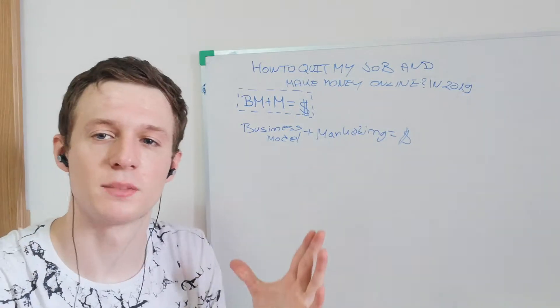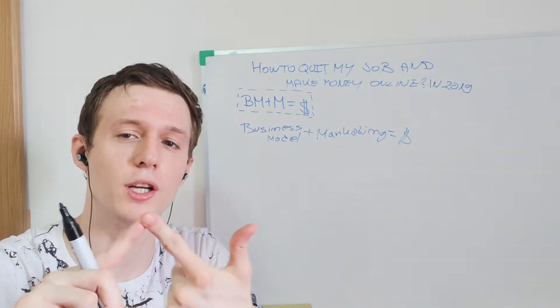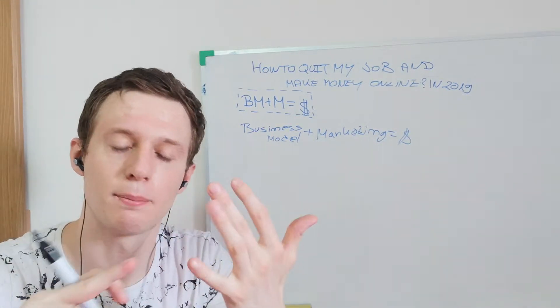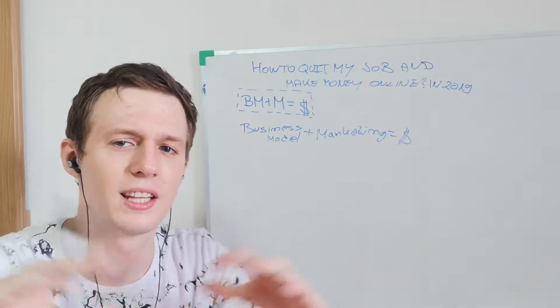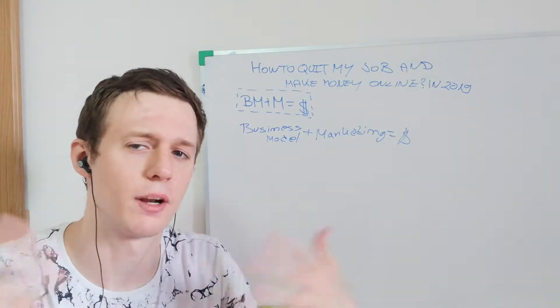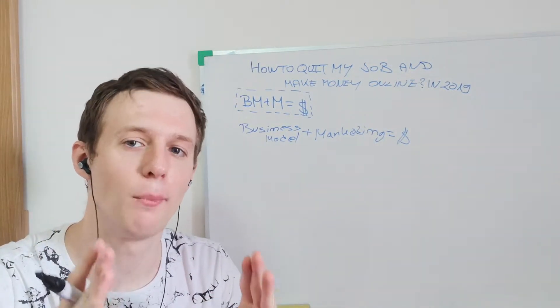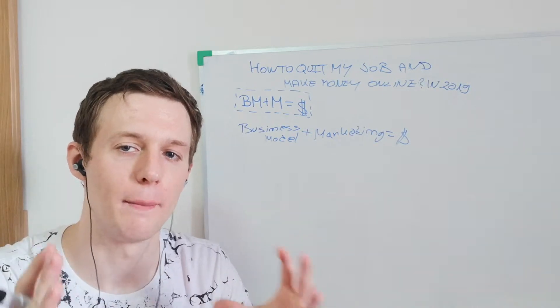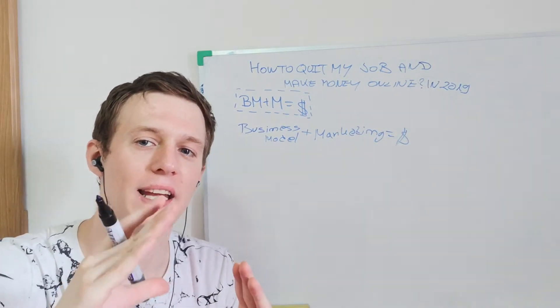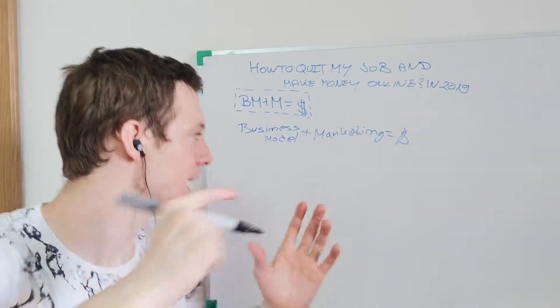So what is the business model? You have different business models today. We have dropshipping, we have e-commerce, we have Amazon FBA, we have affiliate marketing, we have network marketing, different things. We have print on demand, a lot of ways, different business models. But for you, I think the easiest and the simplest business model right now in 2019 to start, to really get you as quickly as possible to quit your job, is affiliate marketing.